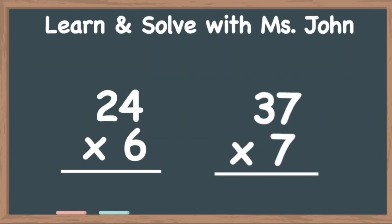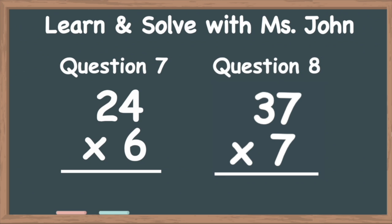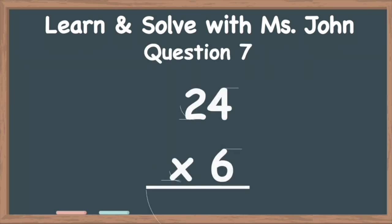We'll complete the next two questions using the long multiplication method. Question number seven: twenty-four times six. First, we're going to multiply six with the ones column, so we're going to do six times four. Then we're going to multiply six times the tens column, so we're going to do six times two.